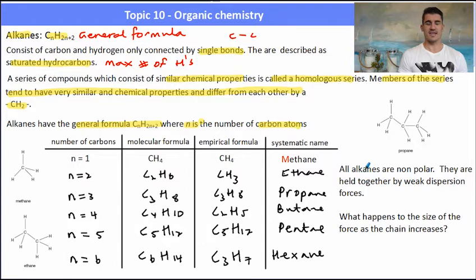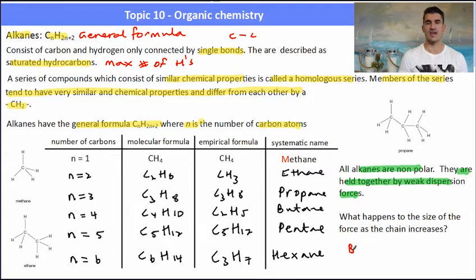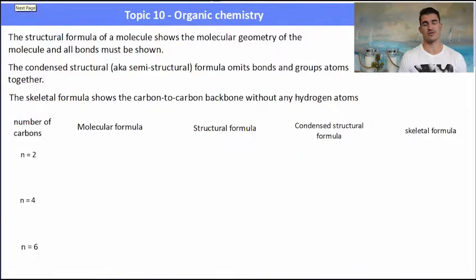One thing you'll notice about alkanes is they're all non-polar, meaning the only thing that holds them together are weak dispersion forces. Think back to topic four: as the size of the chain increases, the London dispersion forces increase, which means boiling points also start to increase. As the molecules get bigger, there are stronger London dispersion forces.